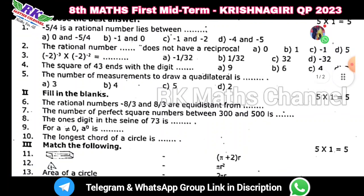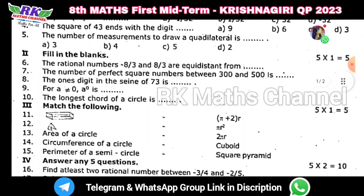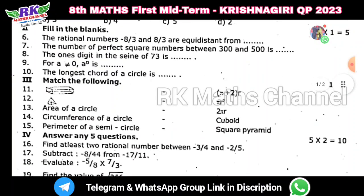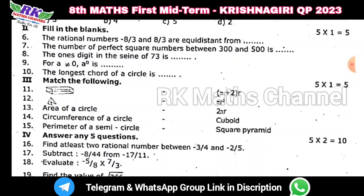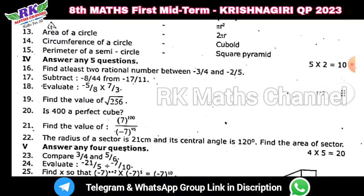Fill in the blanks — one, 5 marks. Match the following — one, 5 marks. Total 15 marks, okay? That's 2 marks, 5 questions.